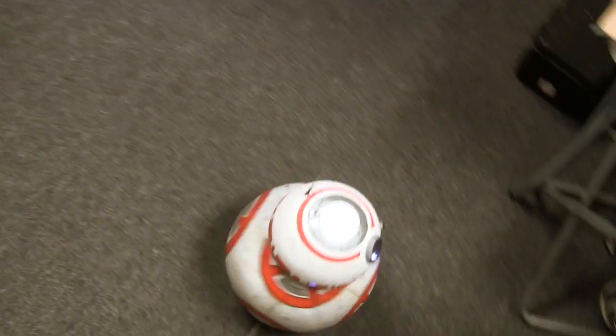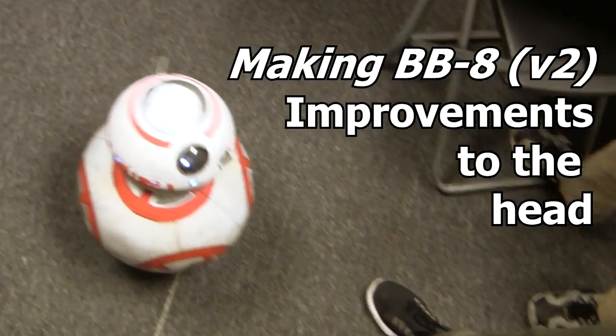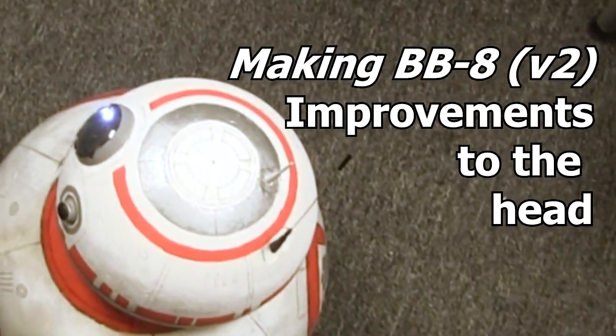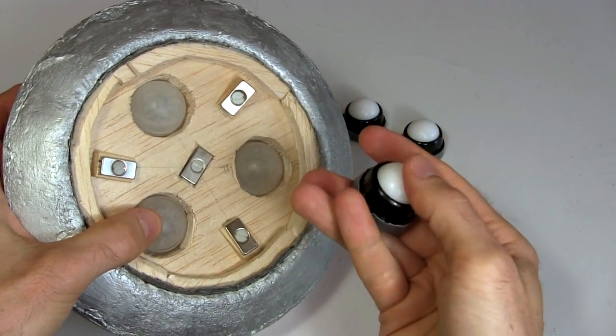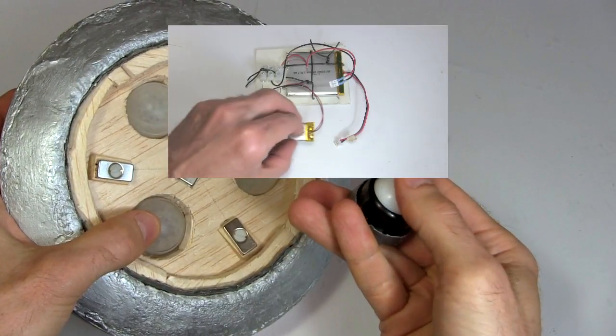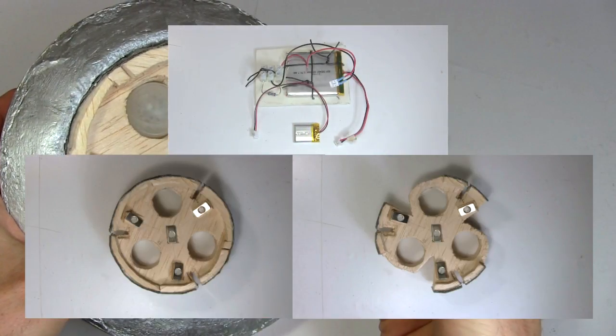Hi gang! This is part 7 of making my BB-8. And this time I'm improving the head. I wanted to replace the deodorant ball casters with these Pololu casters, but they make the head too heavy. So I also did various things to lighten the head.